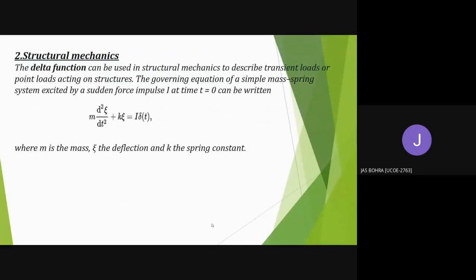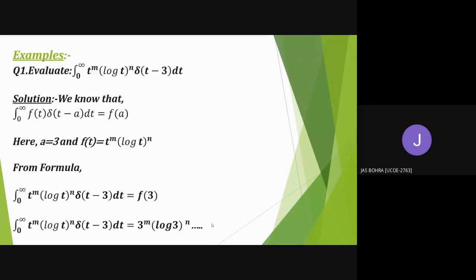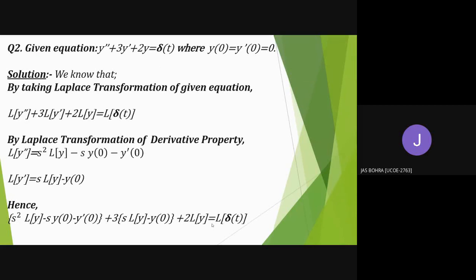The second application of the Dirac delta function is used in structural mechanics to describe transient loads or to find point loads acting on a structure. The formula used is: m times the second derivative of psi with respect to t, plus k times psi, equals I times delta. Now I would like Dipshika to give an example about the Dirac delta function.